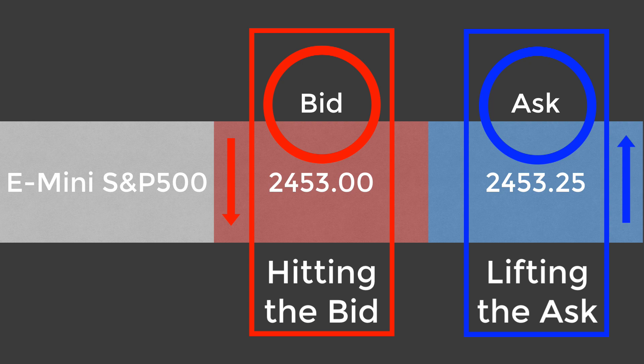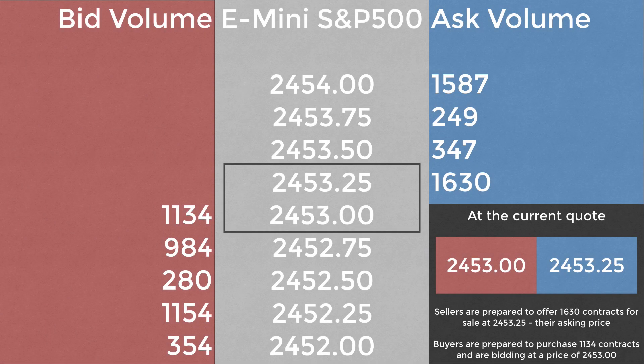As a futures trader, you almost certainly trade using the DOM — the depth of market. Some people pronounce this 'dome', and others refer to it as a price ladder. This display sets out the quantity of limit orders at every price in the market, and can be regarded as the intent of the market to buy and sell at given price levels. Realistically, the volume shown at any level other than the current quote has little meaning — it's a demonstration of intent and subject to much game playing known as spoofing.